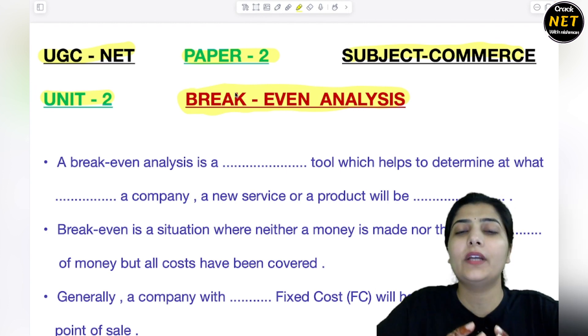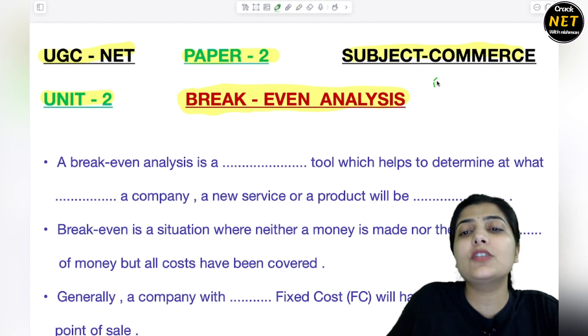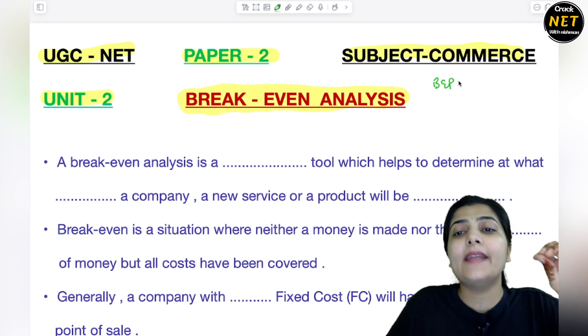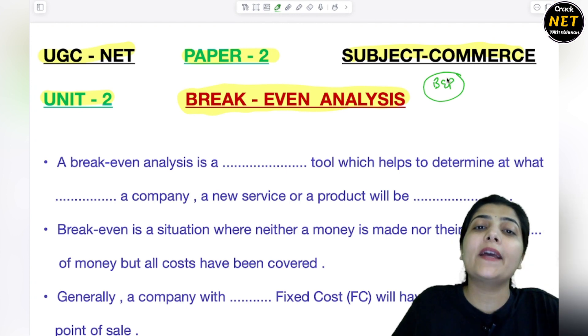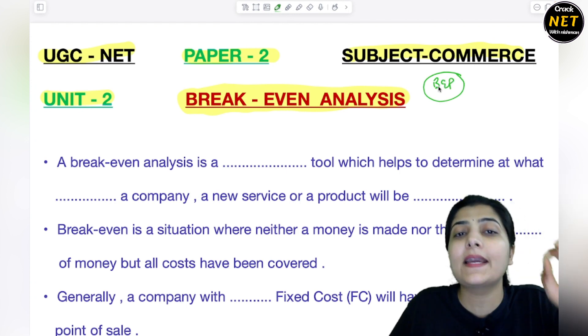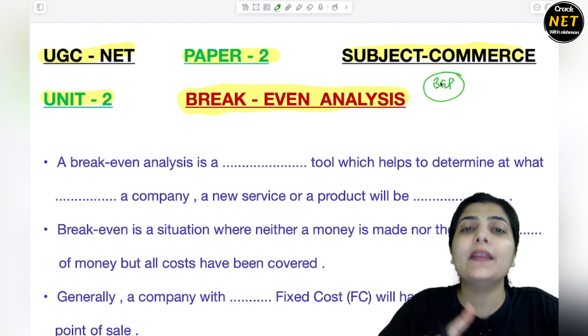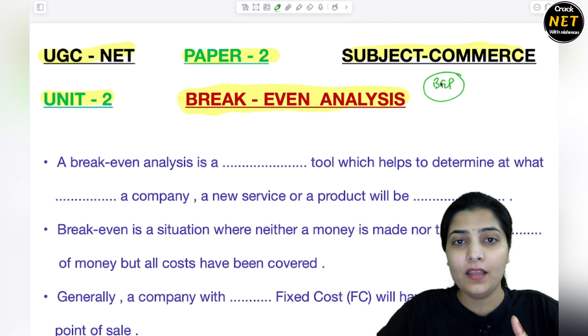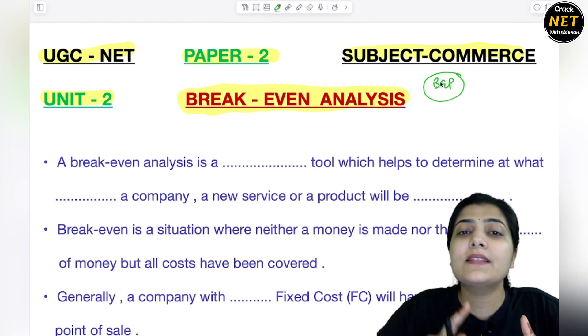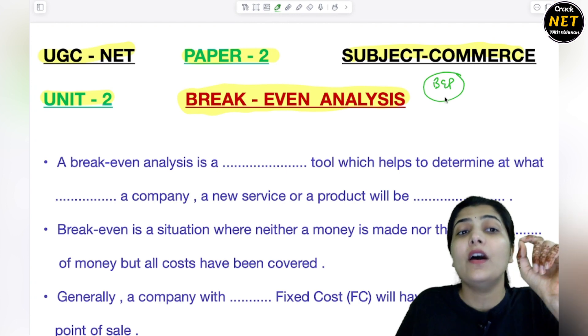You all know what break-even is - a basic understanding that it is a situation of no loss, no gain, no profit. This is the point of equilibrium where the business has neither profit nor loss. In commerce paper, break-even analysis, break-even point calculation, and uses of break-even point are covered. Remember students, questions from break-even analysis will definitely come in the UGC NET exam. This is a very important topic of Unit 2.